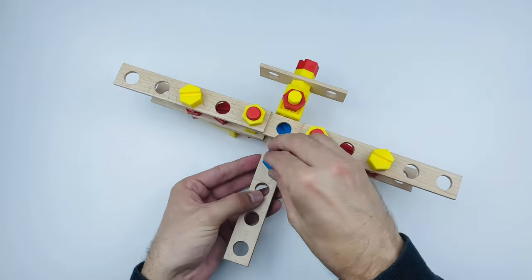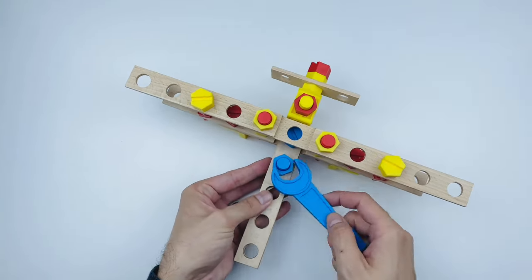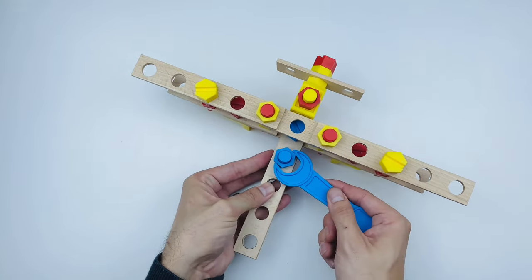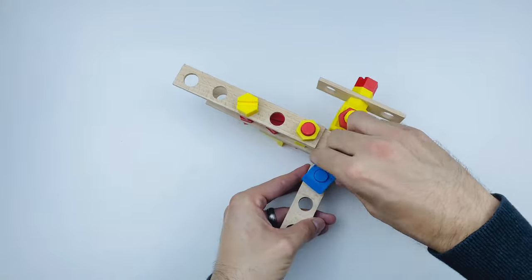Any airplane needs a pilot. A pilot would surely want to sit down and fly the plane. Let's use a blue bolt and nut and a blue bracket to make a seat for the pilot.